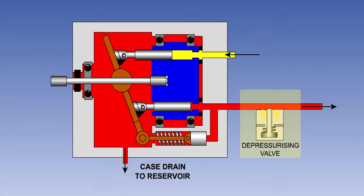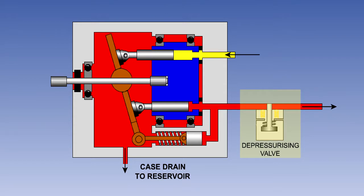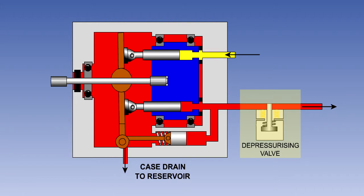On some pumps, a solenoid operated depressurizing valve, or offload valve, can be used to block delivery to the system and to offload the pump. System pressure is maintained, and the pump output falls to below 1,000 PSI, allowing case drain oil to circulate, lubricating and cooling the pump.